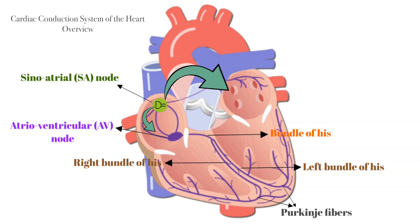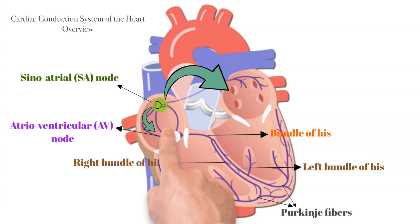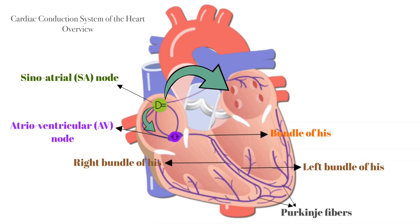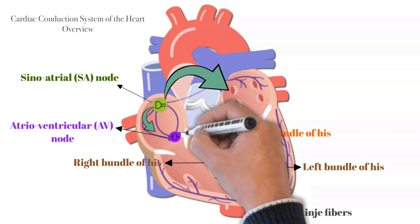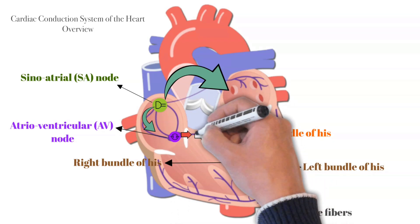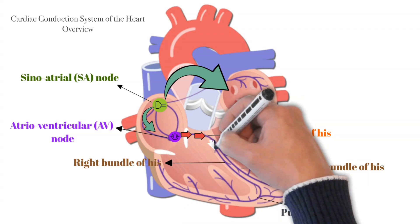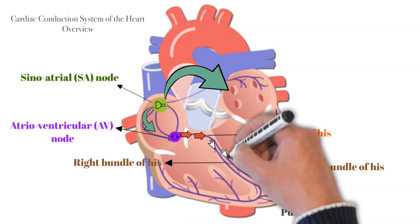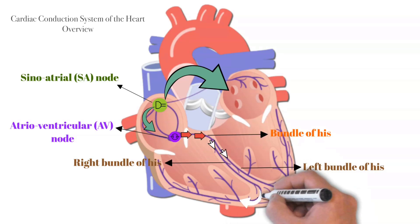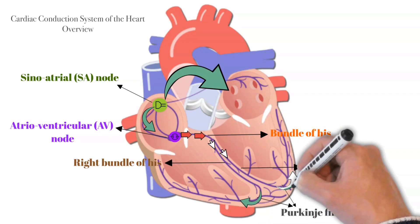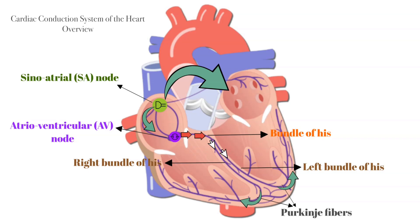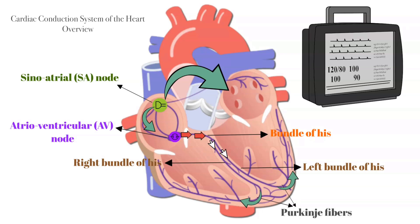The atrioventricular node, or AV node, is located on the right atrium near the AV valve. The AV node serves as an electrical gateway to the ventricles — it delays the passage of electrical impulses to the ventricles. Because of this delay, the atria are able to eject all the blood into the ventricles before the ventricles contract. The AV node then passes signals onto the bundle of His, which divides into right and left bundle branches conducting impulses toward the apex of the heart. The signals are then passed onto Purkinje fibers, turning upward and spreading throughout the ventricular myocardium. This electrical activity of the heart is what we record using the ECG machine.